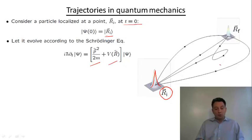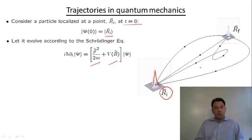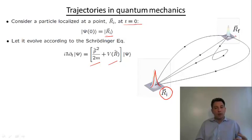As we know from the first lecture, this quantum evolution will involve spreading out of this wave packet with time. So instead of a localized, particle-like entity, it's going to become like a cloud surrounding R sub i, and this spreading out occurs in a very non-trivial fashion in the presence of a potential. The question we're going to ask — which brings us to the notion of a propagator — is what part of this particle will propagate to a certain final point R sub f?